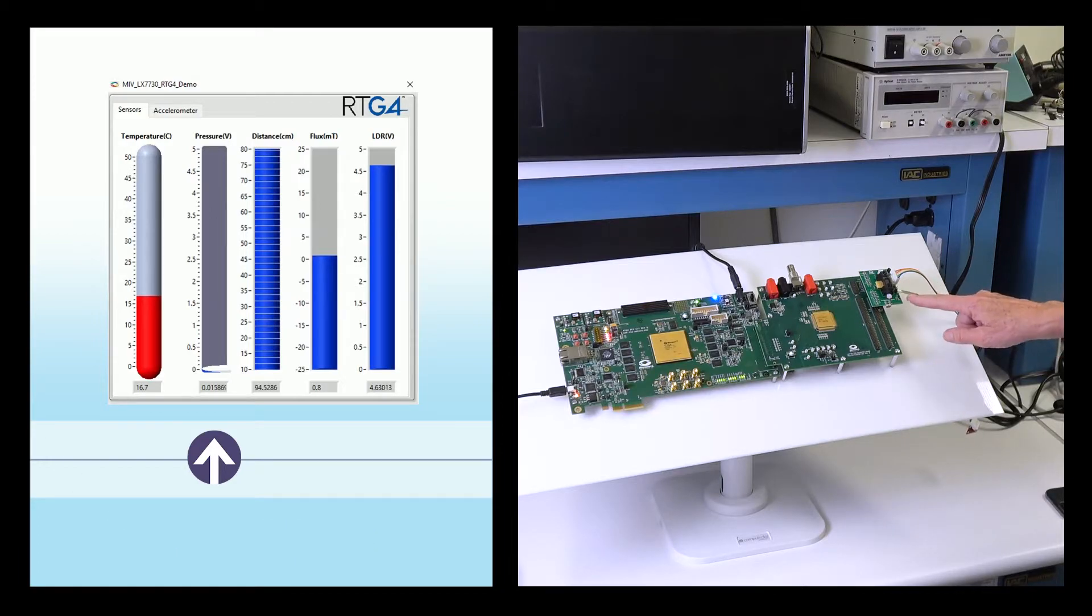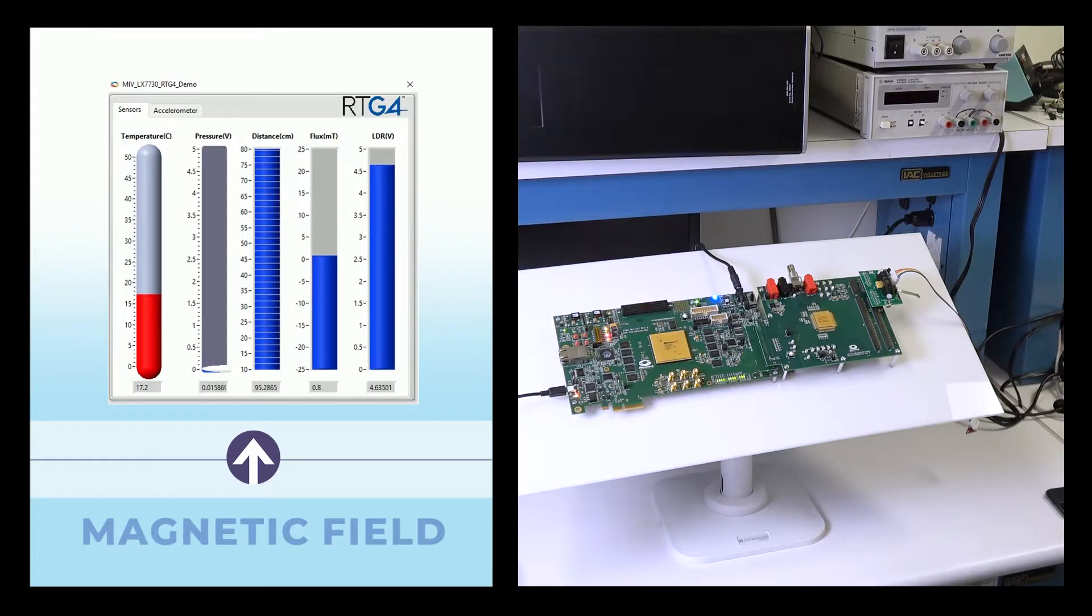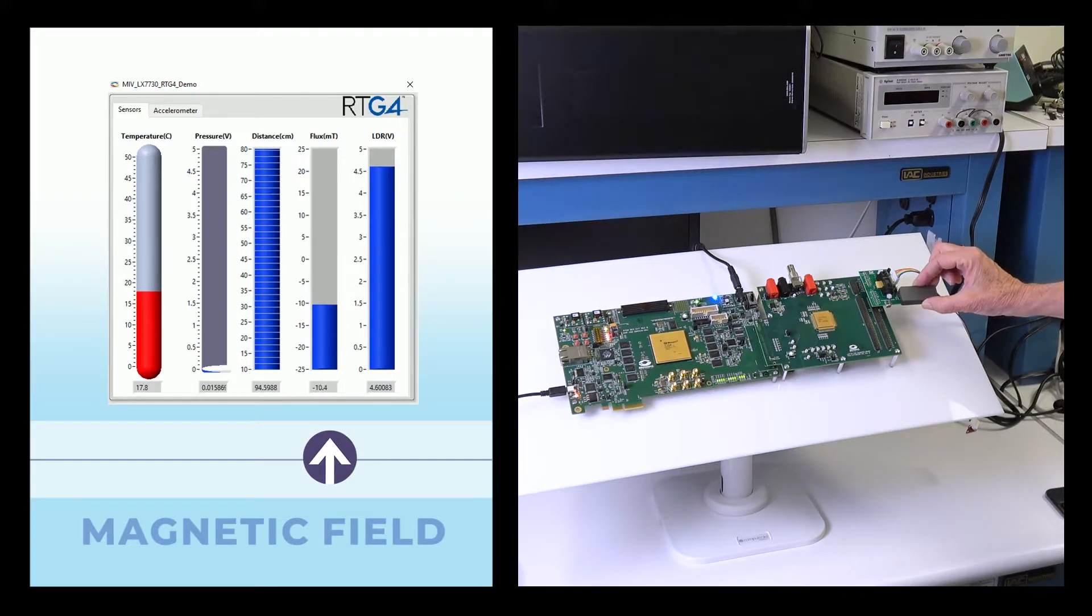Then next we have this sensor right here, which is measuring magnetic field. I have a magnet here, I'm going to move it in front of this magnetic sensor, and you can see that changing.